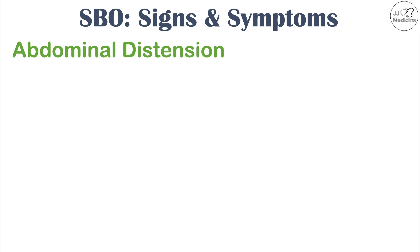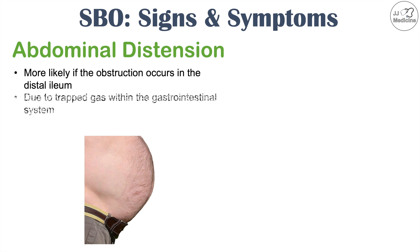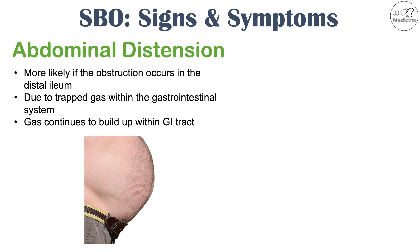Other signs and symptoms include abdominal distension. If there's an obstruction and you're not passing any gas, that gas is going to sit in your gastrointestinal tract. This is more likely to occur if the obstruction occurs in the distal ileum — the last part of the small intestine where it meets the large intestine. All that trapped gas can cause bloating of the abdomen as it continues to build up within the gastrointestinal tract.